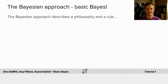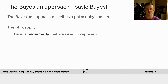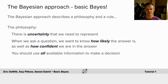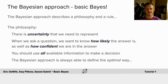Today we're going to tell you about the Bayesian approach — Basic Bayes. The Bayesian approach describes a philosophy and a rule. The philosophy is that there is uncertainty that we need to represent in the world, and when we ask a question we want to know how likely the answer is and how confident we are in that answer. We should use all of the available information we have to make a decision. Importantly, the Bayesian approach always gives us a way to define the optimal way to do this.